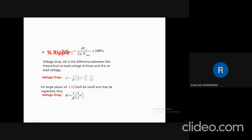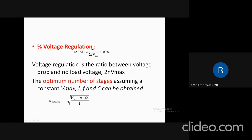For larger values of N, the ripple will be small and can be neglected. The voltage drop can be represented as delta V = I / (2FC) × (2/3)N³. The voltage regulation formula is: percentage delta V = (delta V / 2N·Vmax) × 100%. Voltage regulation is the ratio between the voltage drop and the no-load voltage 2N·Vmax. To obtain the optimum number of stages assuming constant Vmax, I, F, and C, the N optimum expression is: N_opt = √(Vmax × FC / I).